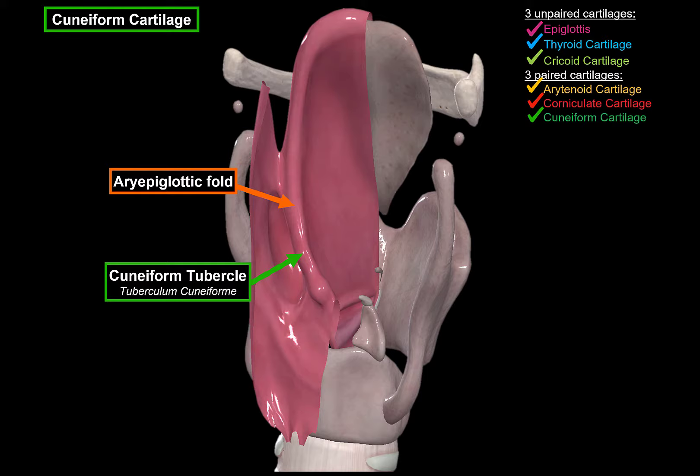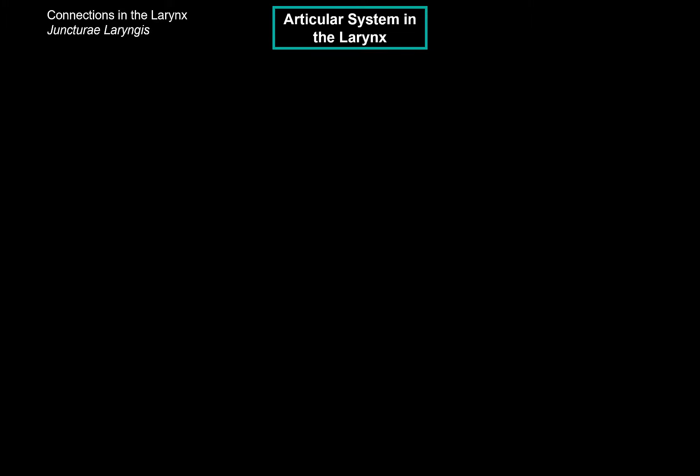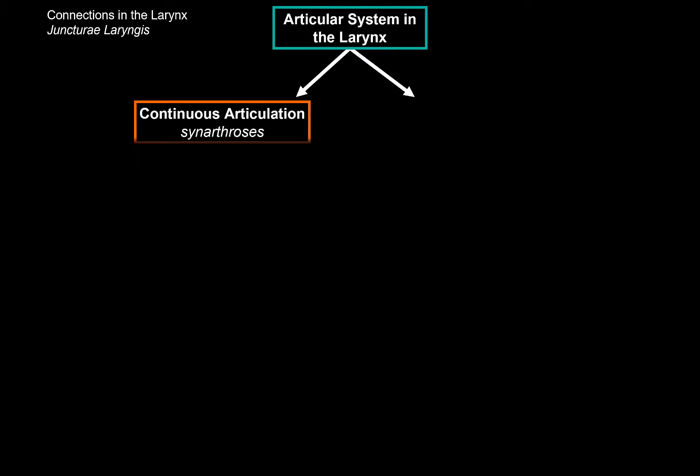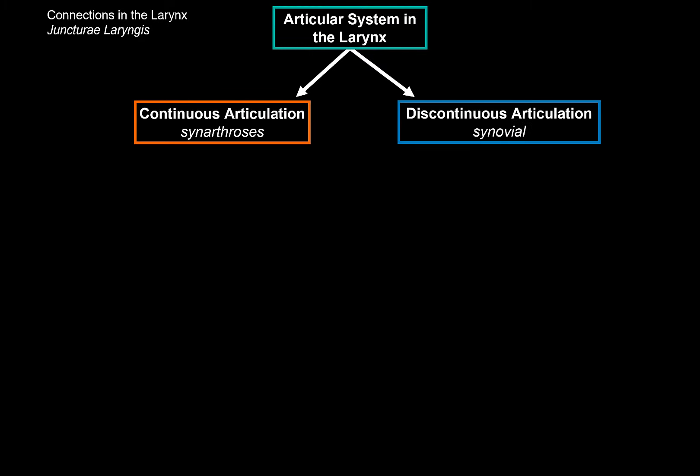So those are the cartilages that make up the larynx. Now we need to cover the connections in the larynx, or the Junctura laryngis. The articular system in the larynx is divided into two types of connections: continuous articulations and discontinuous articulations. Continuous connections are uninterrupted articular connections. Discontinuous connections are interrupted in that they contain a cavity within the articulation, which forms a joint.